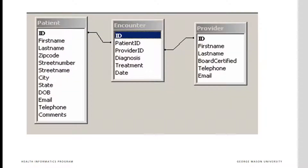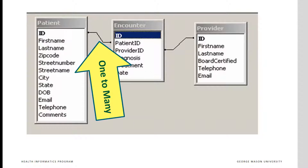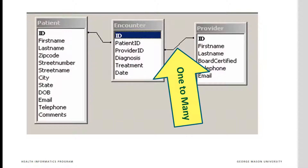This graph shows how the encounter table connects the patient and provider tables. Every patient shows only once in the patient table but can appear many times in the encounter table. Similarly, every provider shows only once in the provider table but can appear many times in the encounter table.